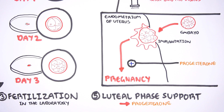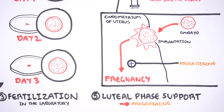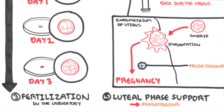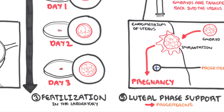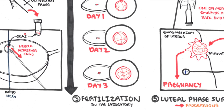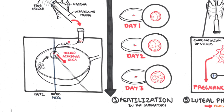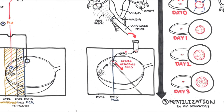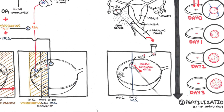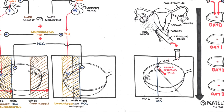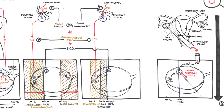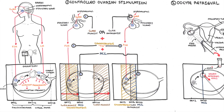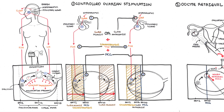Let us recap the 5 important steps in in vitro fertilization. Number 1 was controlled ovarian stimulation with GnRH agonists or antagonists, plus gonadotropins, plus human chorionic gonadotropin. Step 2 is oocyte retrieval, step 3 is fertilization in the laboratory, step 4 is embryo transfer into the uterus, and step 5 is luteal phase support using progesterone.